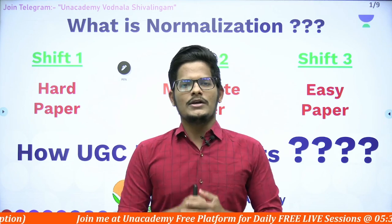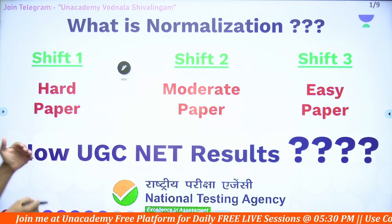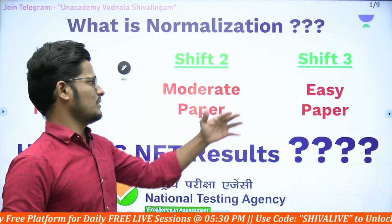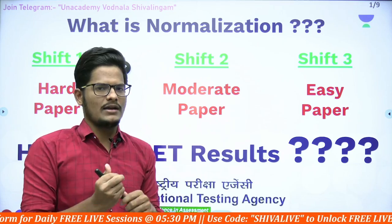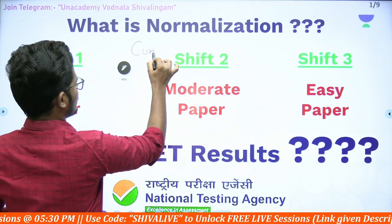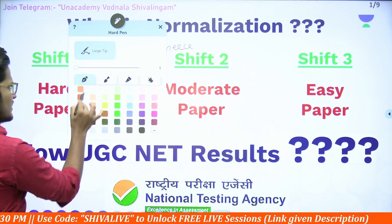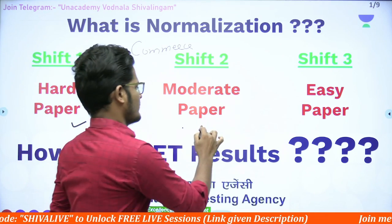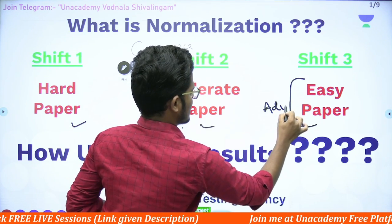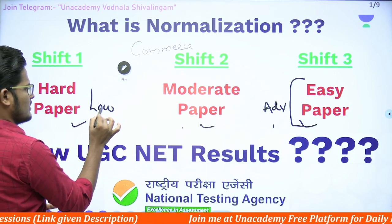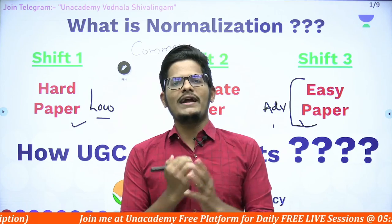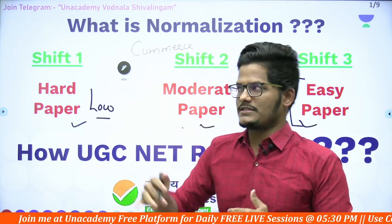The percentile is nothing but a normalization process. When the scenario is like this — shift one people felt the question paper is very hard, shift two people think the question paper is moderate, and shift three has an easy question paper — this becomes a problem for declaring results. When the question paper is not equal for the same subject, say commerce, but different difficulty levels are given — hard, moderate, and easy — then people who got the easy paper have a higher chance and those with the hard paper have a lower chance. This discriminative result needs to be avoided.